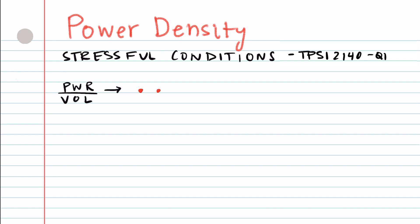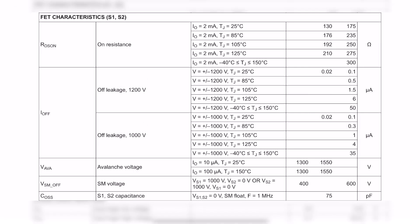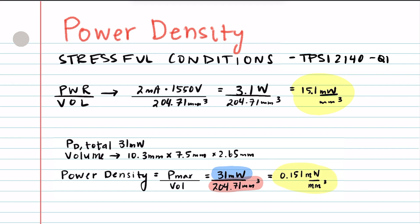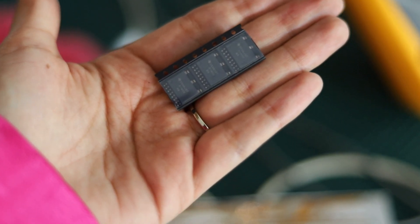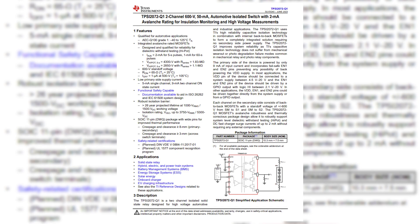Now let's also look at how much power can be consumed under stressful conditions for the TPSI2140. During high-voltage transient testing, the switch can consume up to two milliamps for five seconds. We also know that the average voltage is 1550 volts. That gives us 3.1 watts. Divide that by the volume and we get 15.1 milliwatts per millimeters cubed — that is a hundred times the power density. That's amazing, and that is also what the wider-pins package was designed for. Now it's your turn: feel free to do the same calculation for the TPSI2072 — just remember it is two channel.